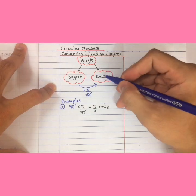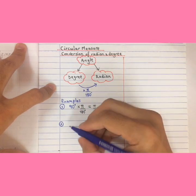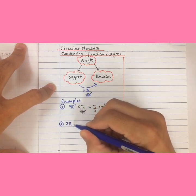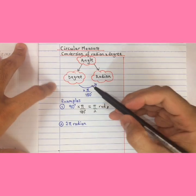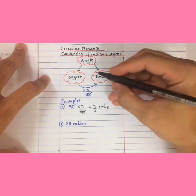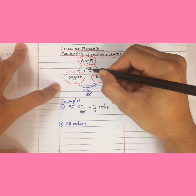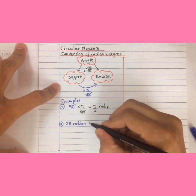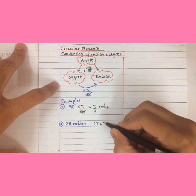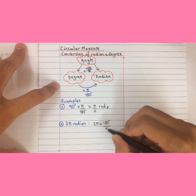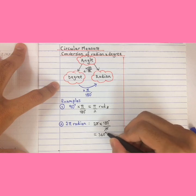If you want to convert from radian to degree, you have to reverse the fraction. For example, you have 2π radian and you want to convert to degree. So you have to flip the operation — radian to degree means you times 180 and divide by pi. So you write 2π times 180 divided by pi. You simplify the pi, and the answer will be 360 degrees.